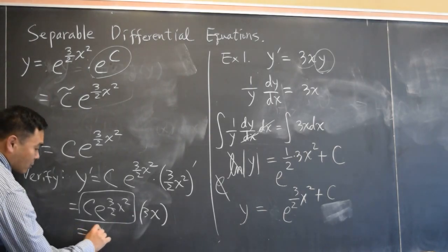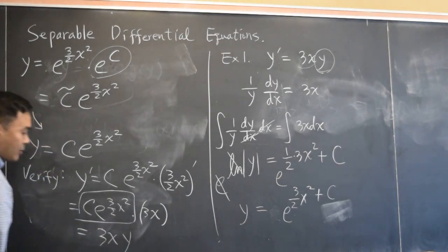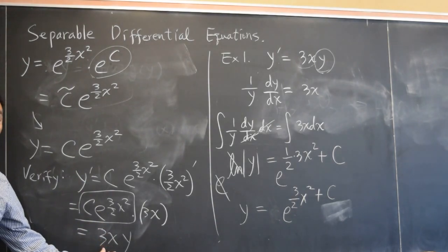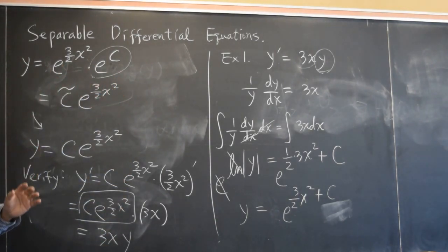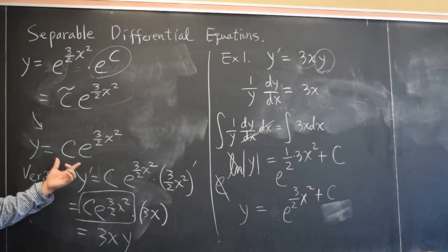So you do get 3x times y. So we have verified that y prime is indeed the same as 3xy, and therefore, the original equation is satisfied for this solution. That's how you check.